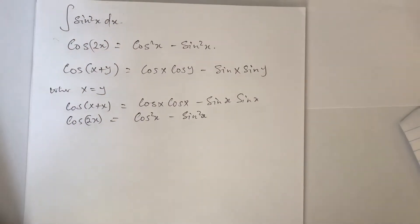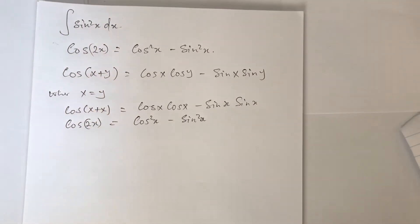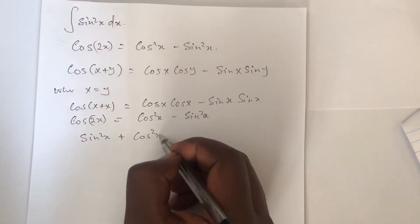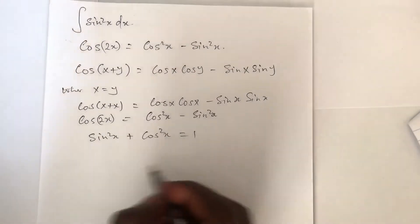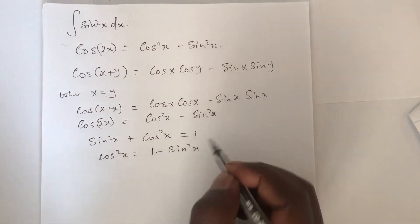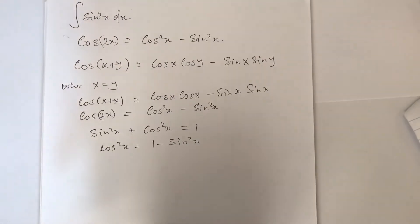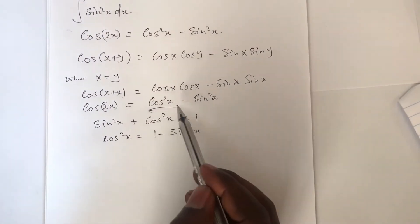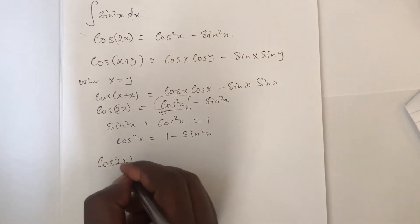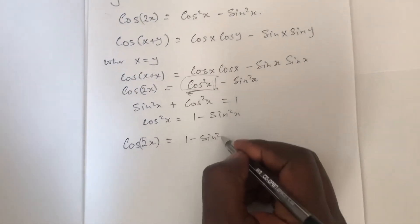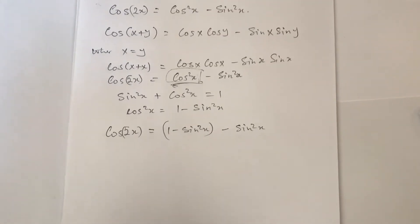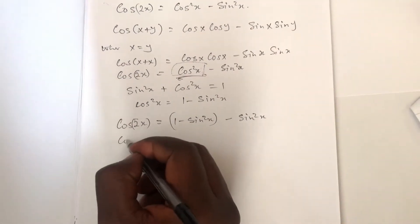At this point we also make use of another common trigonometric identity: sine squared x plus cos squared x is equal to 1. Rearranging, we get cos squared x is equal to 1 minus sine squared x. We then substitute 1 minus sine squared x for cos squared x in the cos 2x identity, giving cos 2x is equal to 1 minus sine squared x minus sine squared x.